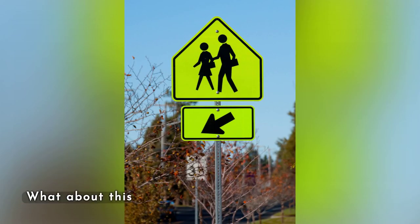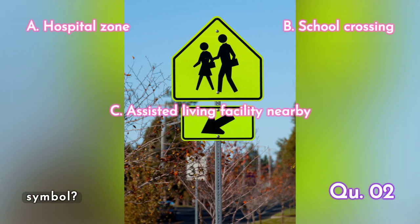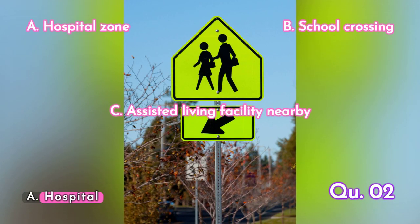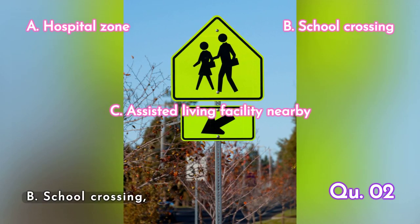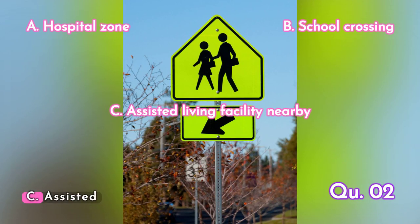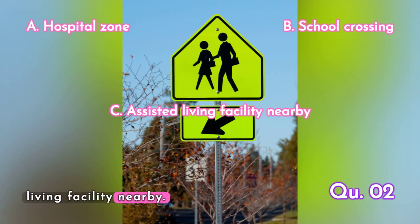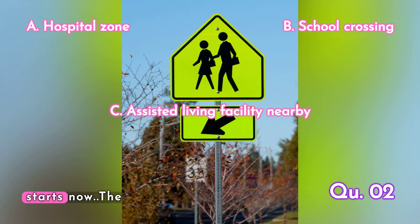Question 2. What about this symbol? A. Hospital zone, B. School crossing, C. Assisted living facility nearby. Your time starts now!